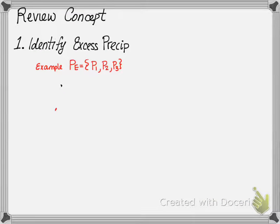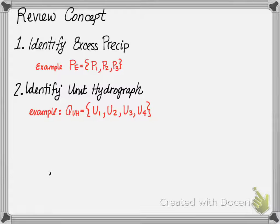Let's review the concept. First, identify your excess precipitation. Imagine you had an excess precipitation with three ordinances, P1, P2, and P3. Next, you need to identify your unit hydrograph. For this example, let's assume we have four ordinances, U1, U2, U3, U4.